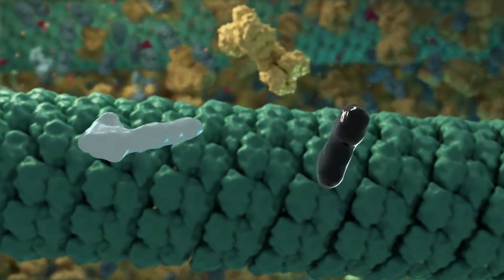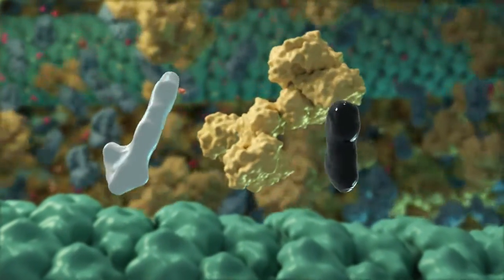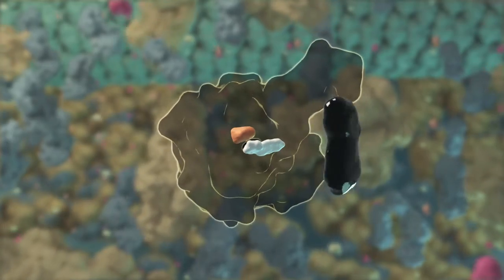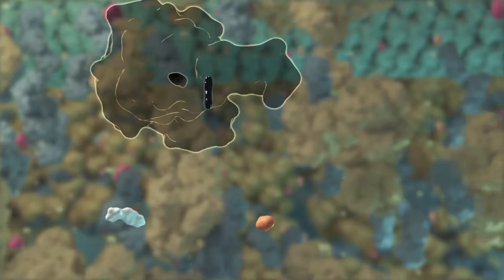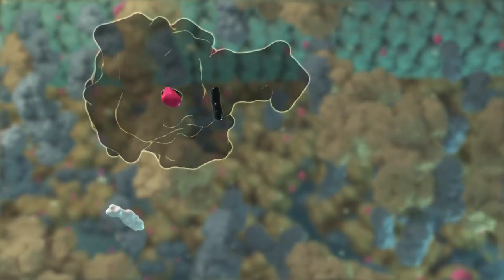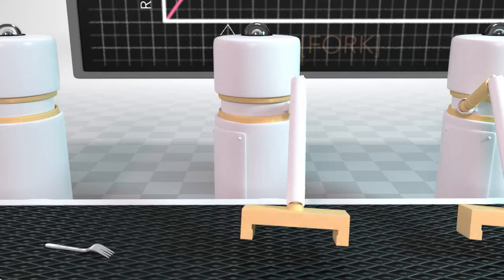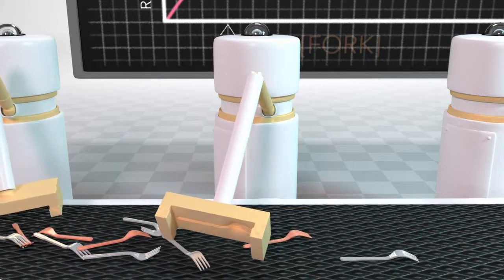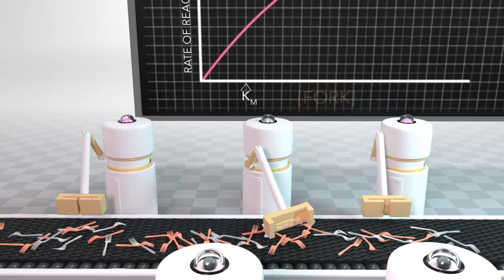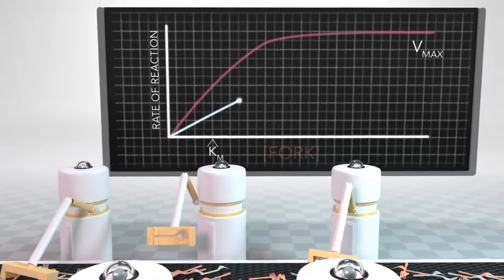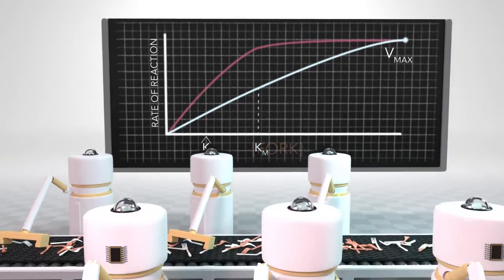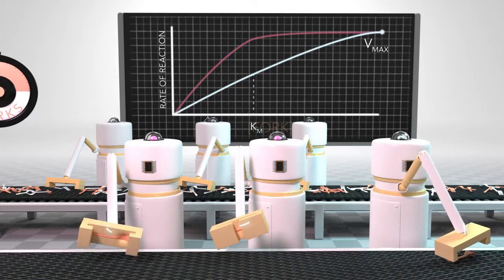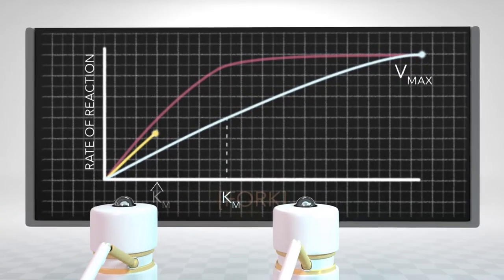Changes in Km and Vmax can also help us identify the mode of action for different enzyme inhibitors. There are two types of inhibitors: competitive and non-competitive. Competitive inhibitors have structures that mimic the substrates and compete with the substrate for the enzyme active site. When a competitive inhibitor is present, such as the stainless steel fork, our Robros can't distinguish between the inhibitor and their substrate — they treat it like a plastic fork but can't convert it to a spork. This slows down the overall system, so the apparent Km of the system increases. A non-competitive inhibitor, like this chip, decreases the robot's efficiency at converting forks into sporks but has no effect on their ability to bind forks, so the overall Vmax decreases but Km remains the same.